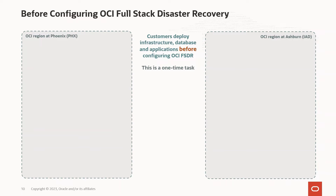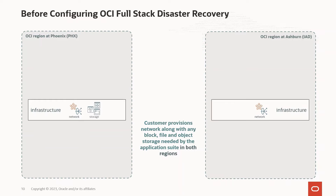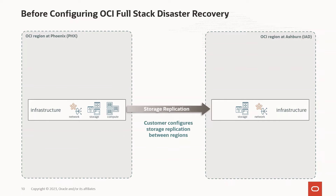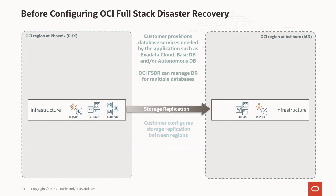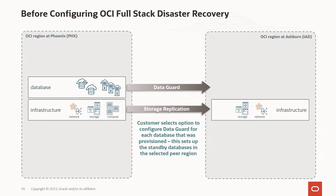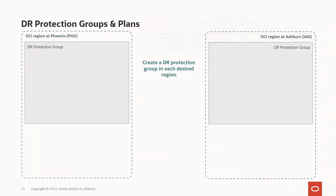Before we start talking about Full Stack Disaster Recovery, you have to deploy everything that you're going to use — everything has to be in place and functioning. You have to provision the network along with any block, file, or object storage needed by the application in both regions, and deploy the compute needed for the application. If you're using storage replication, you have to configure it across the regions. You have to provision the databases — currently supported options include Exadata Cloud, Base Database, and Autonomous Shared across regions. Data Guard associations have to be enabled across regions and without issues. You also have to provision Oracle or non-Oracle applications, application servers, or middleware.